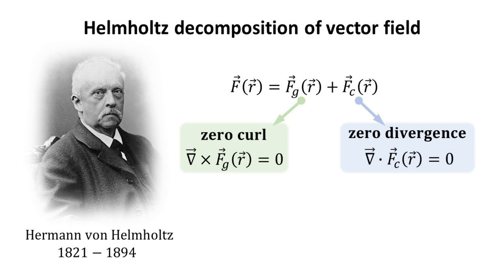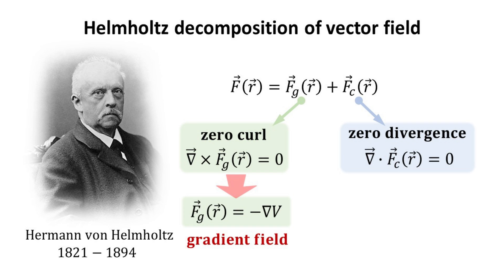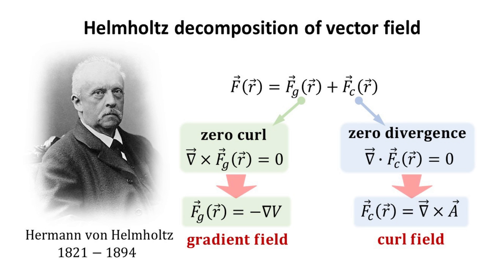The Fundamental Theorem of Vector Calculus, also known as the Helmholtz Decomposition Theorem, states that a continuous vector field F can always be decomposed into its constituent parts, herein denoted as Fg and Fc. Fg is the field that is irrotational and has zero curl, which can be constructed from the gradient of a scalar field — thus we call Fg a gradient field. Fc is the field that is rotational or solenoidal and thus has zero divergence; it can be constructed from the curl of a vector field — thus we call Fc a curl field.